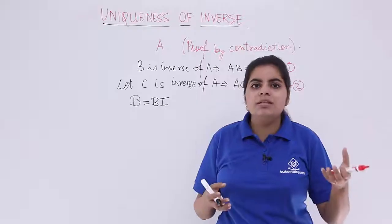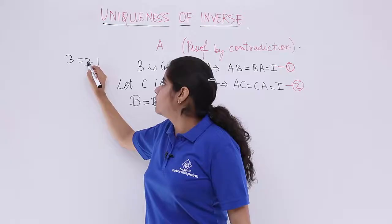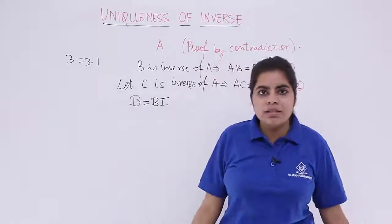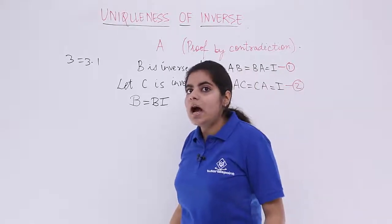It is as good as 3 into 1 is 3. So you can write 3 is equal to 3 into 1 and this one is known as the identity element. Similarly, B is equal to B into I.